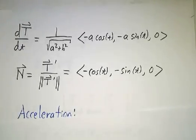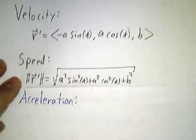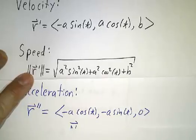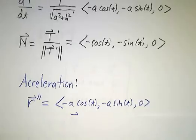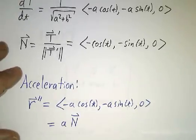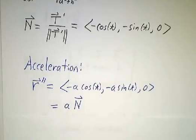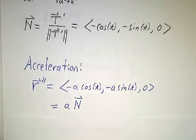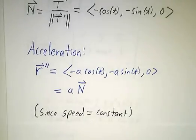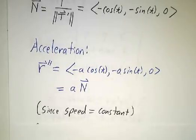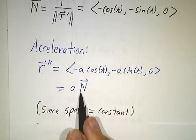The next thing is acceleration, which is one of the easiest things to compute — you just take the derivative of the velocity. We get −a·cos(t)i − a·sin(t)j, and the acceleration points in the exact same direction as the normal vector — it's a times the normal vector. That's because our speed was constant at √(a² + b²), so we're never accelerating forwards or backwards. All of our acceleration is in the sideways direction. If you break up the acceleration into tangential and normal pieces, it's entirely normal.